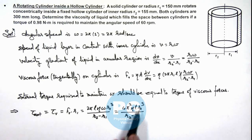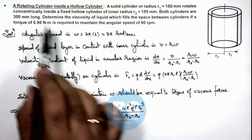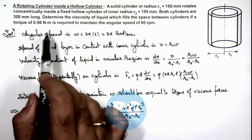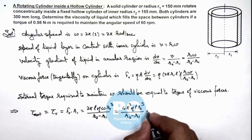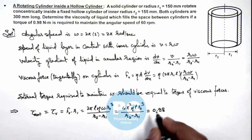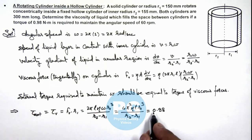So this is the external torque required, and we are given that the required torque is 0.98 newton meter. So if we equate this value to 0.98, simplifying this expression we'll get the value of coefficient of viscosity.